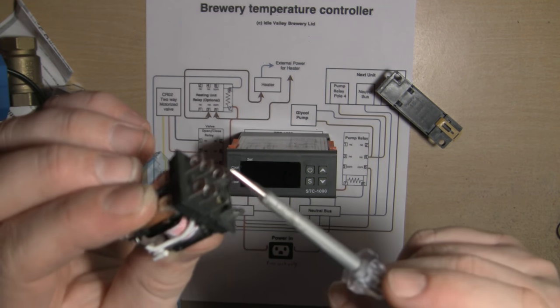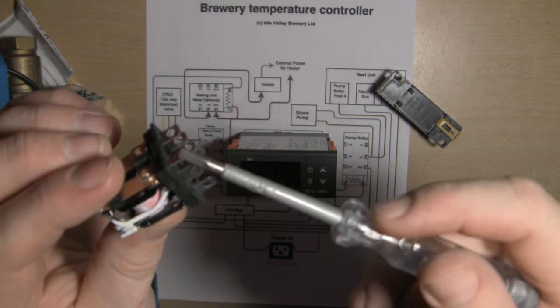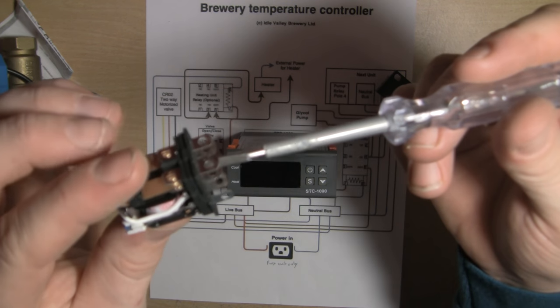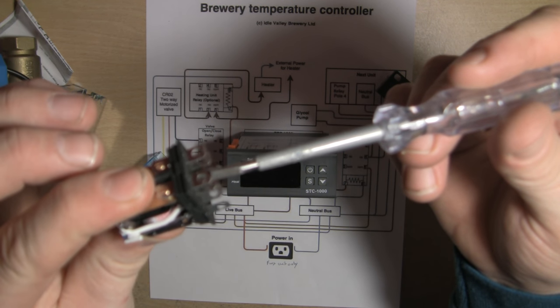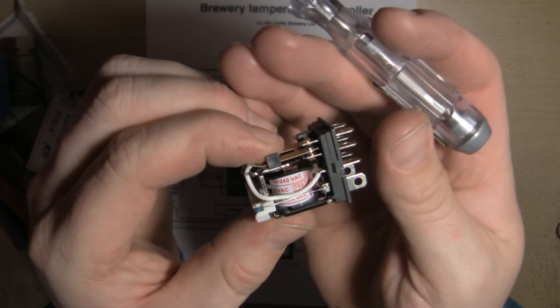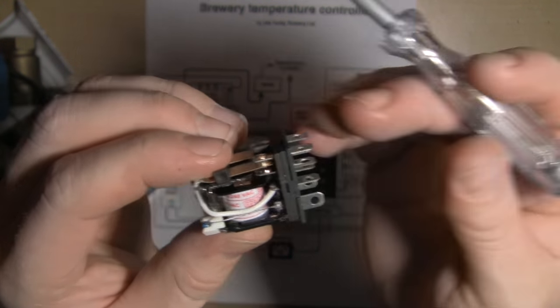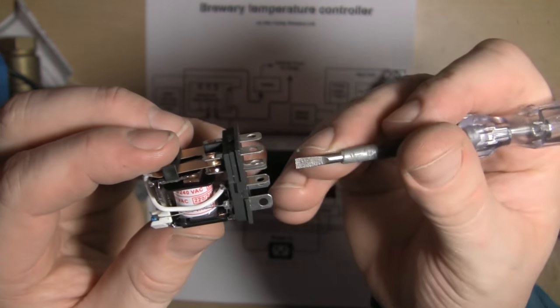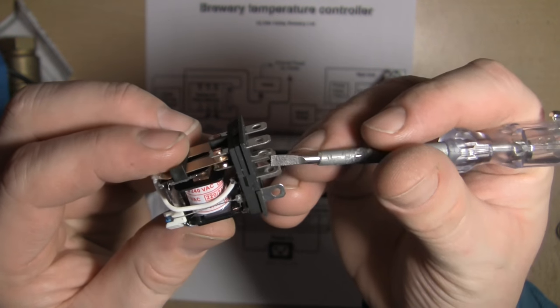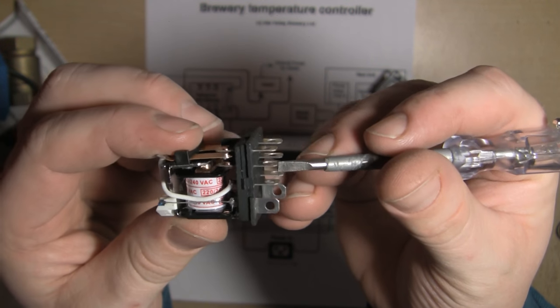The next two contacts up are your common. Whatever you connect on here is basically your supply. If you want your supply to be on all of the time, you'd connect to your normally closed. Then when the relay activates, it breaks the contact.